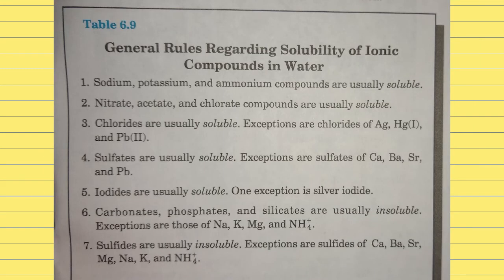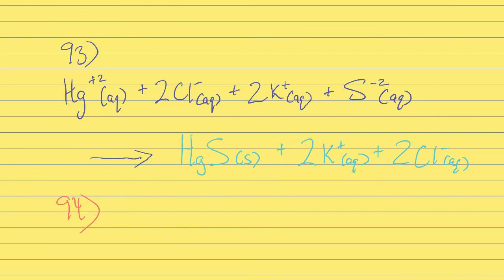If we look at table 6-9 near the bottom, we'll notice sulfides are usually insoluble. It gives a few exceptions, but mercury Hg is not on the list. So HgS is a solid. They put a down arrow next to that in the formula, right after the HgS. That means a precipitate is coming out.